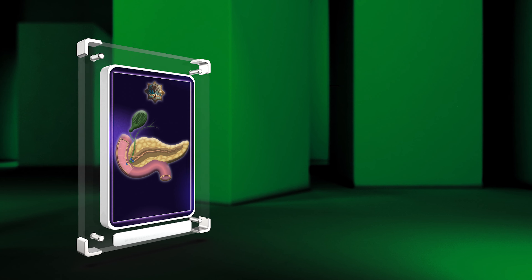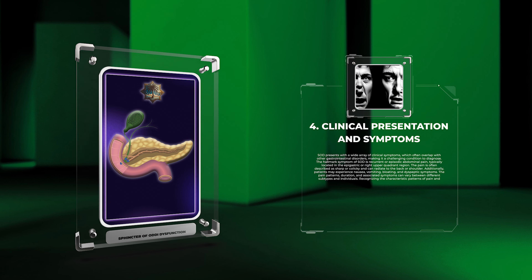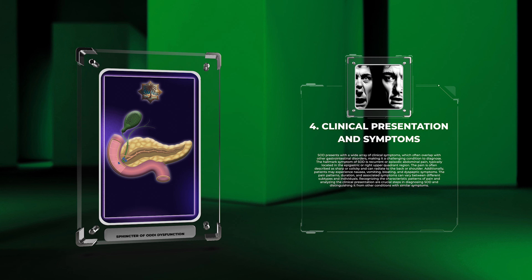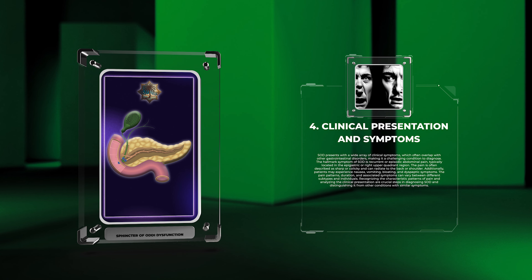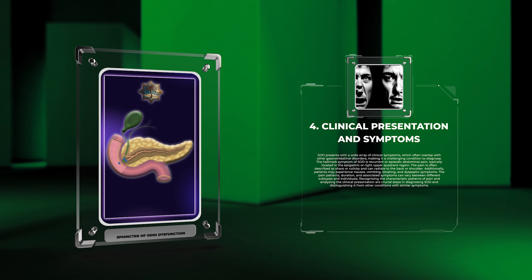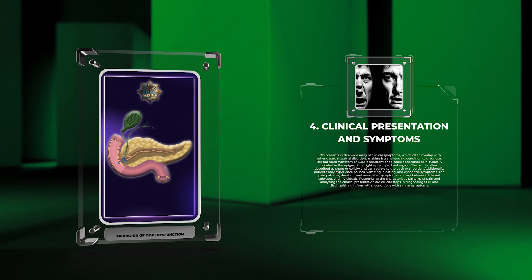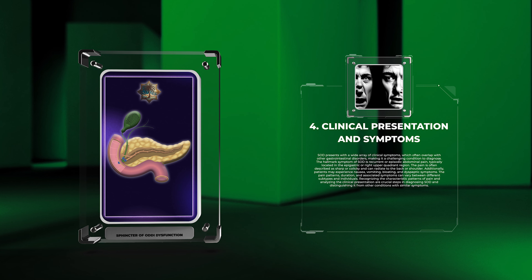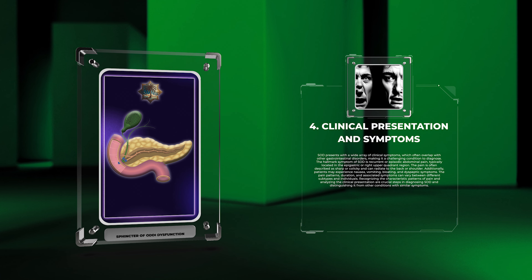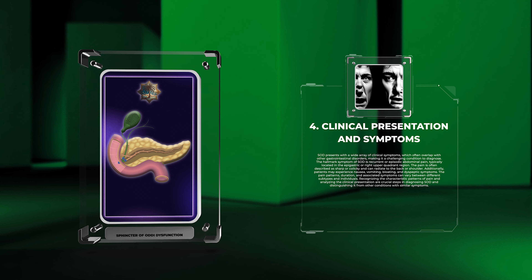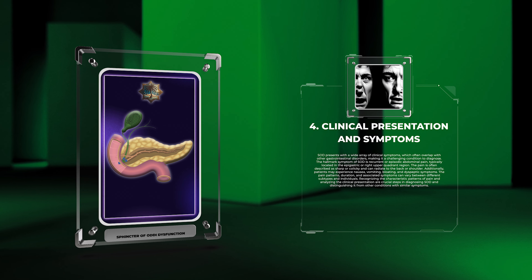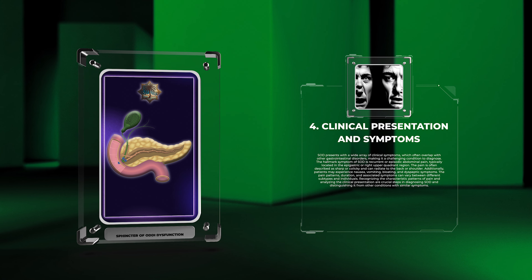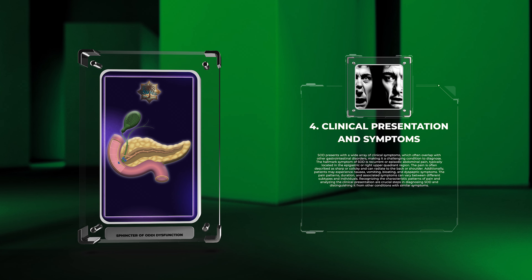SOD presents with a wide array of clinical symptoms, which often overlap with other gastrointestinal disorders, making it a challenging condition to diagnose. The hallmark symptom is recurrent or episodic abdominal pain, typically located in the epigastric or right upper quadrant region. The pain is often described as sharp or colicky and can radiate to the back or shoulder. Additionally, patients may experience nausea, vomiting, bloating, and dyspeptic symptoms. Recognizing the characteristic patterns of pain and analyzing the clinical presentation are crucial steps in diagnosing SOD.